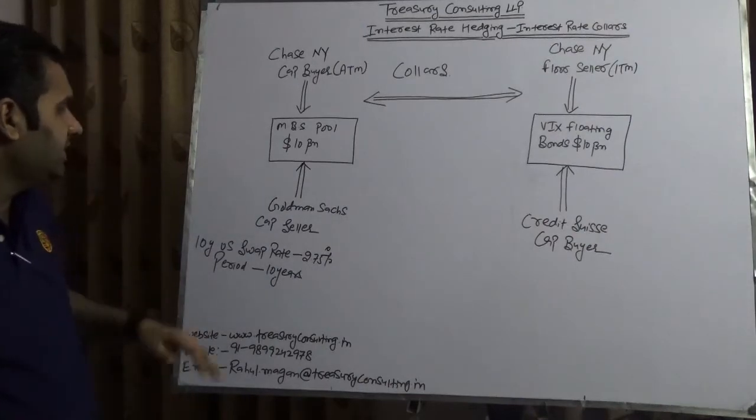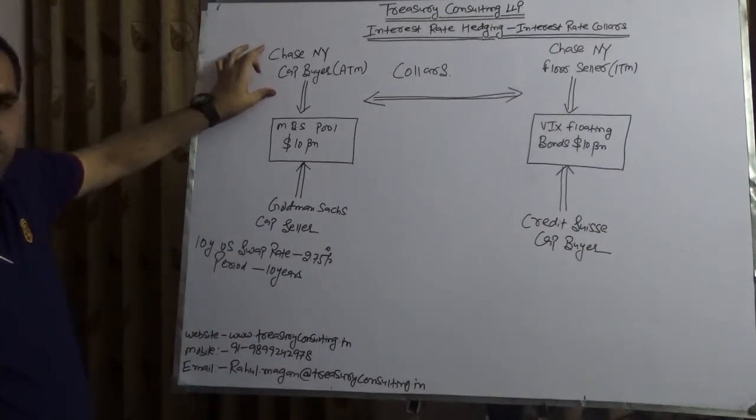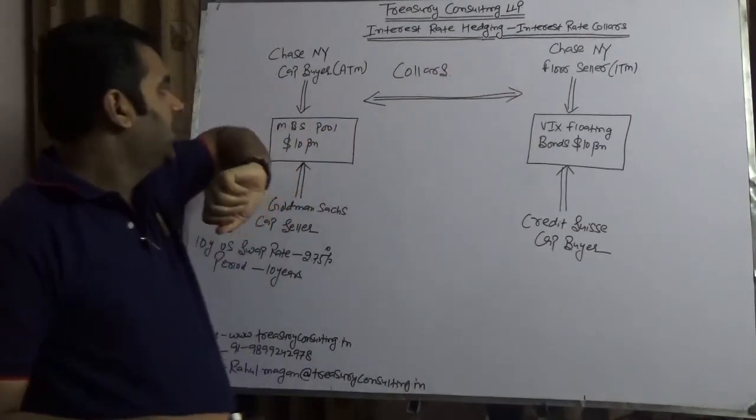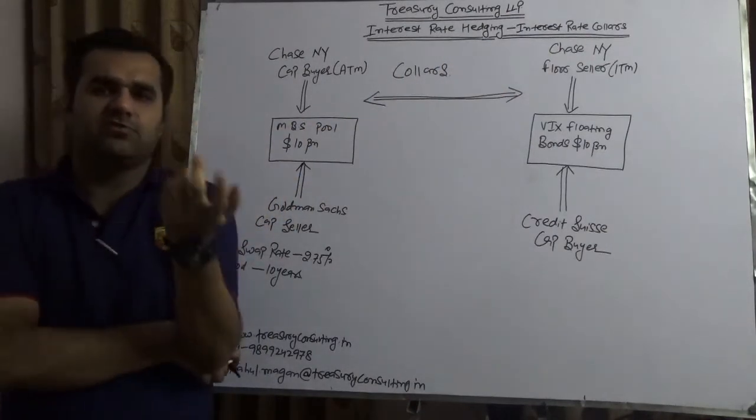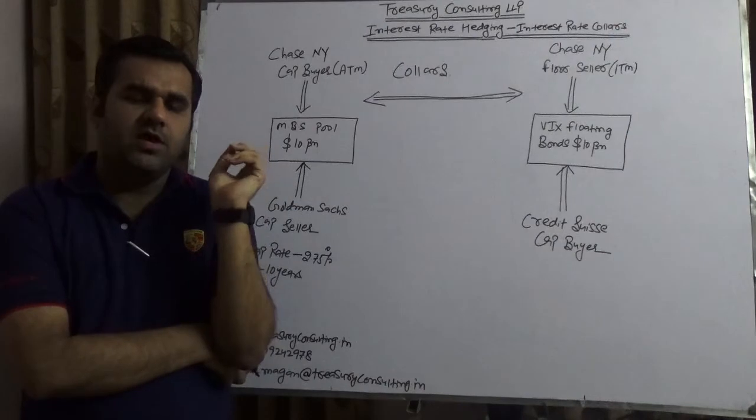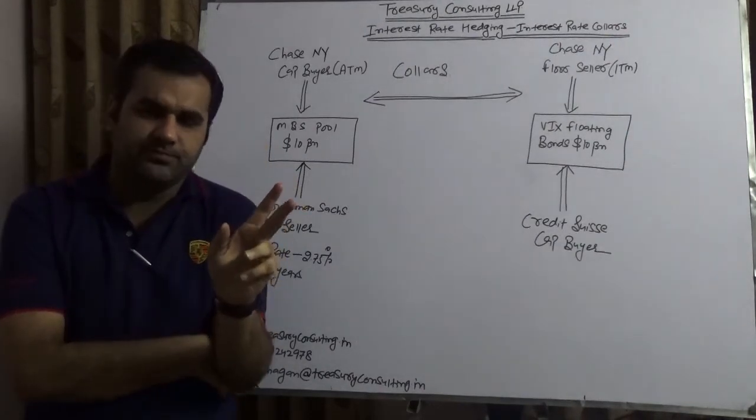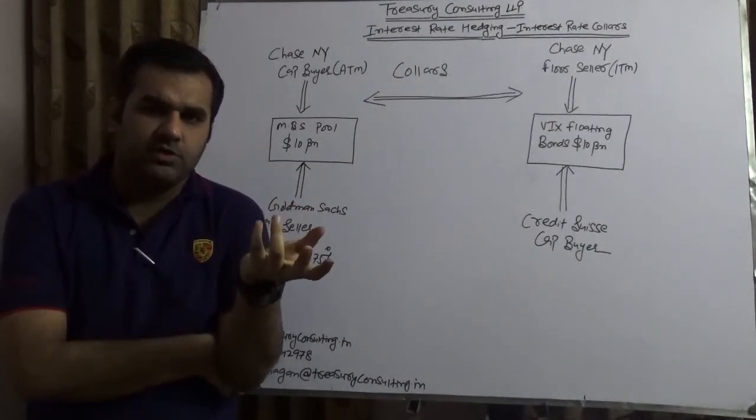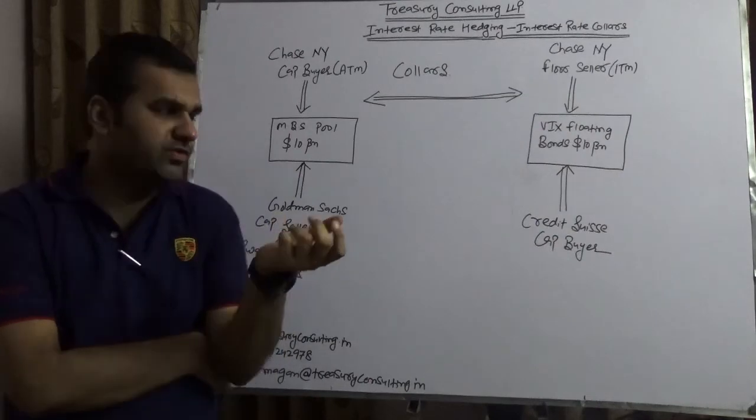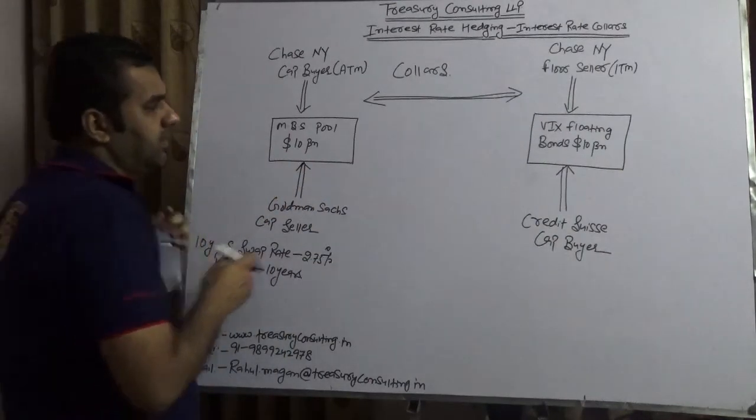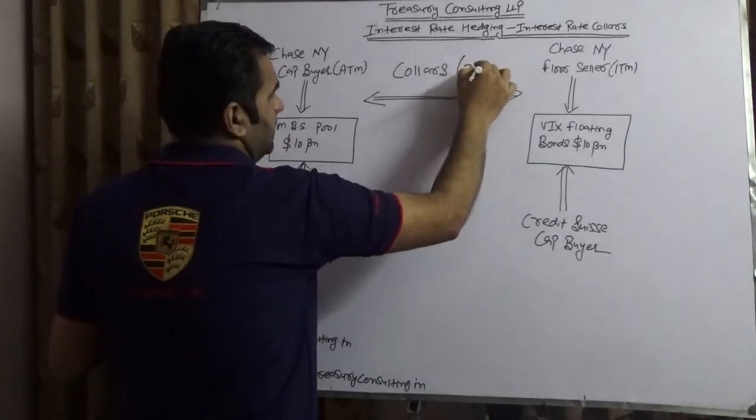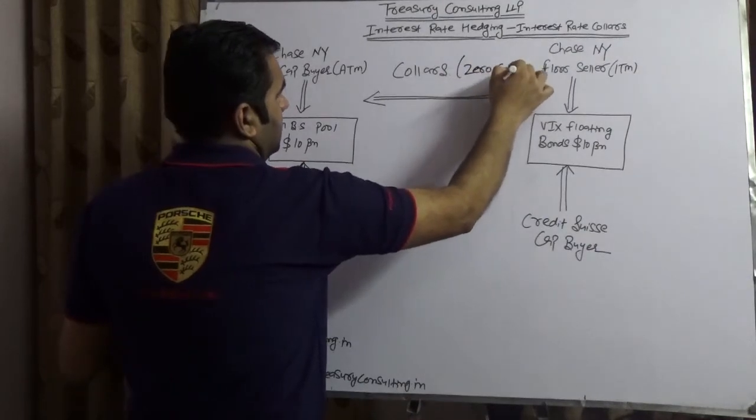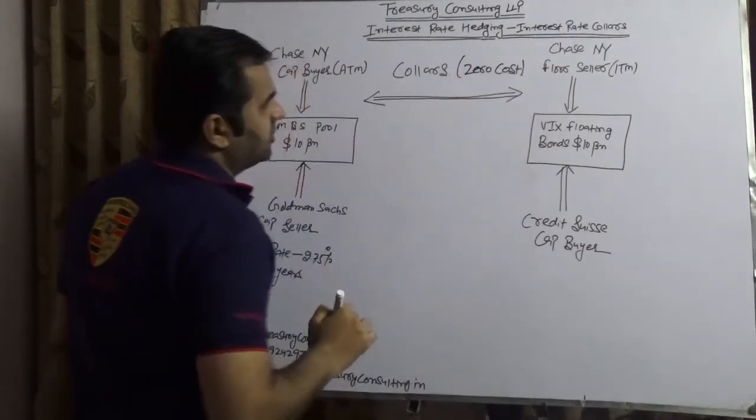Here what we are doing is we have a party which is Chase New York on both sides. What is a collar? Like you have a range forward. Here we are assuming it to be a zero cost collar. We actually need to price it using Thomson Reuters or Bloomberg. So we are assuming it to be a zero cost collar.